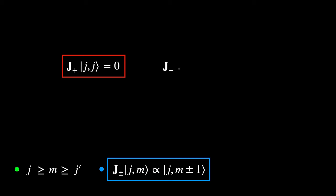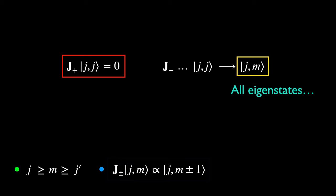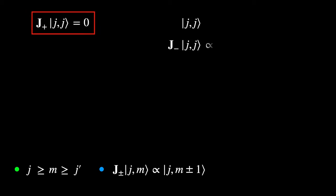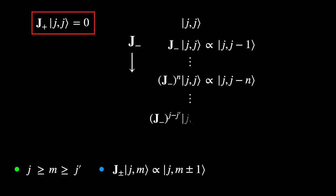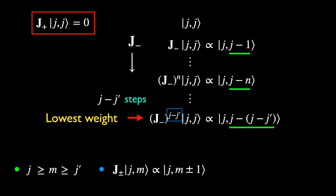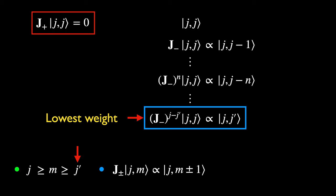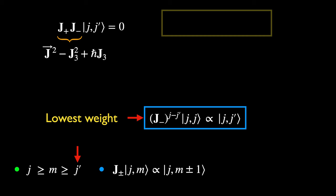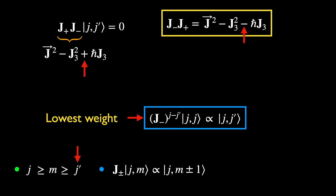We can then generate all the other |J,m⟩ states using the lowering operator. The entire set of states thus generated, all sharing the same eigenvalue for J-squared, is known as the J-multiplet. After moving down J minus J-prime number of steps, we will reach the lowest weight state with M equals J-prime. Applying J-minus any further will give zero. Next, we can apply J-plus instead, leading us to an identity for the product J-plus J-minus reminiscent of the earlier yellow-box identity, with plus and minus switched.